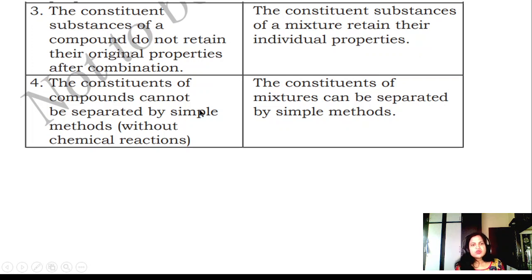Constituents of compounds cannot be separated by simple methods without chemical reactions. Constituents of mixture can be separated by simple methods. For example, rice grains and jowar grains are mixed up together. You can separate it. It takes time, but you can easily separate them.